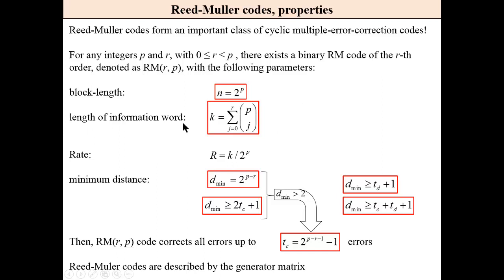The minimum distance can be described by this formula. Without any proof, we may correct, if this distance is greater than 2, errors described by this equation. Eventually, we may detect and correct errors taking these formulas into account.